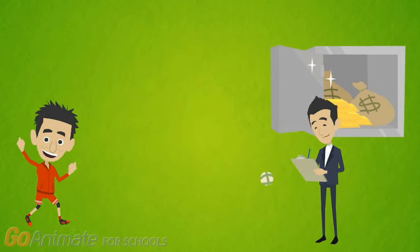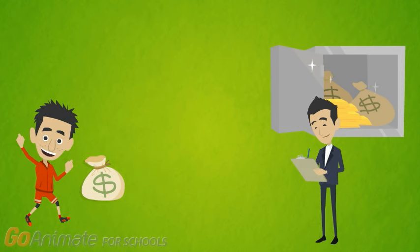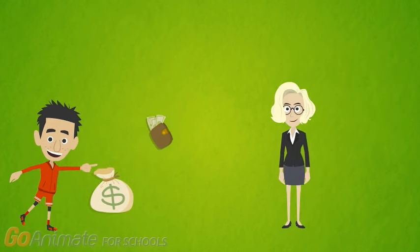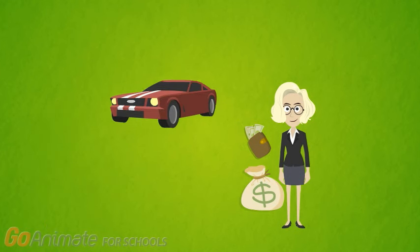Billy thinks this sounds pretty good. The bank advances Billy $18,000. Billy combines this with his $2,000 deposit and pays this to the car salesperson. Billy drives off in his nice new car.